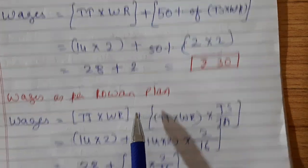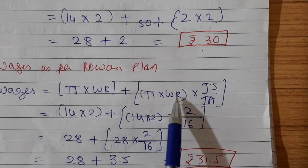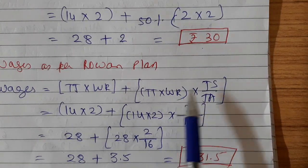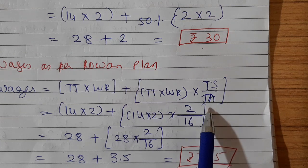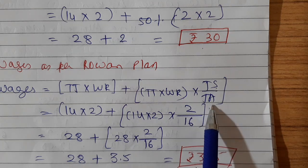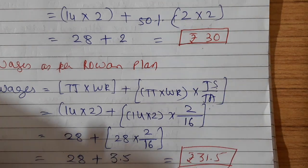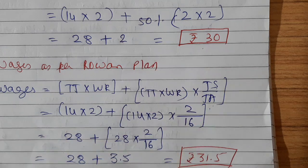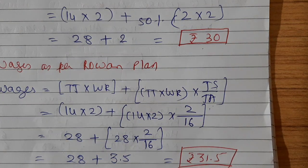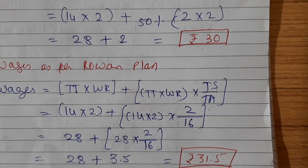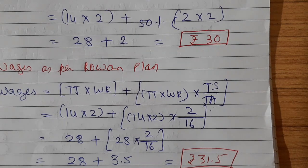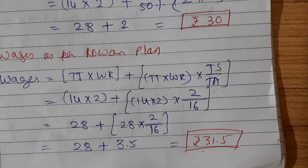In the Rowan plan it is scientifically calculated. Not only is time saved considered, but it is considered in proportion to time allowed. So this is a more scientific way to calculate the bonus. This is the answer of this example.